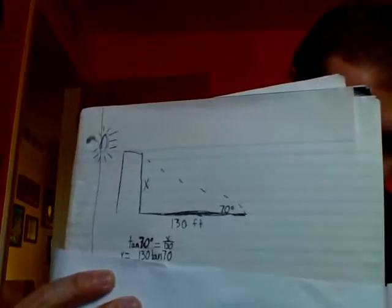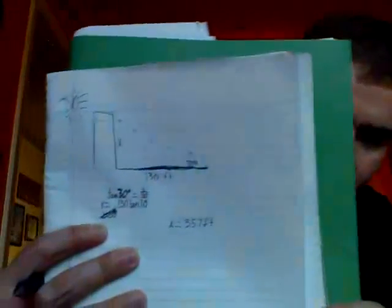Your next equation should look like this: x equals 130 times the tangent of 70 degrees. You're going to want to grab your scientific calculator or graphing calculator and put it in. Your answer should come out to 357.172, etc. But because it says round to the nearest foot, and because the first decimal place is a one, we are going to be rounding down, so the answer should be 357 feet.